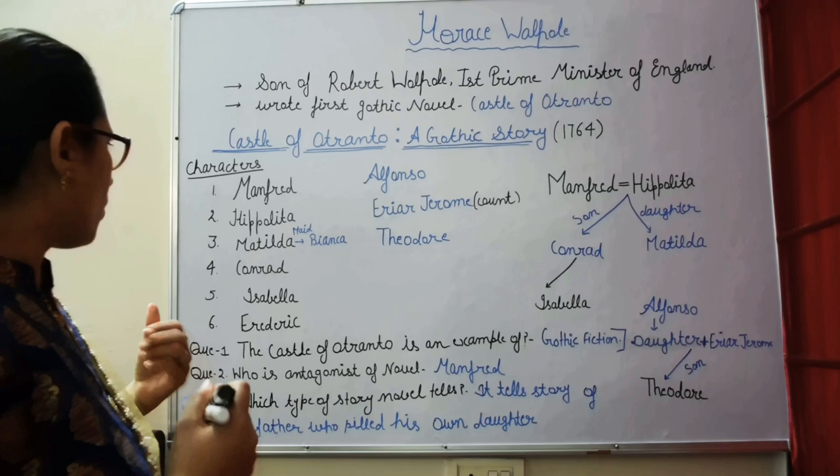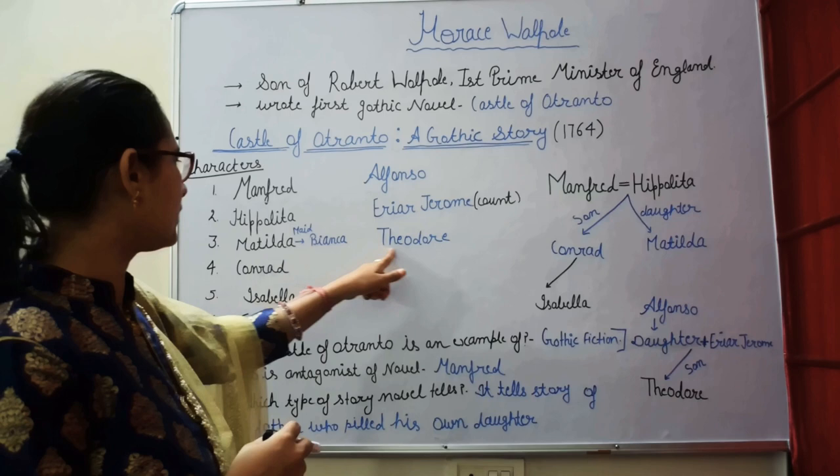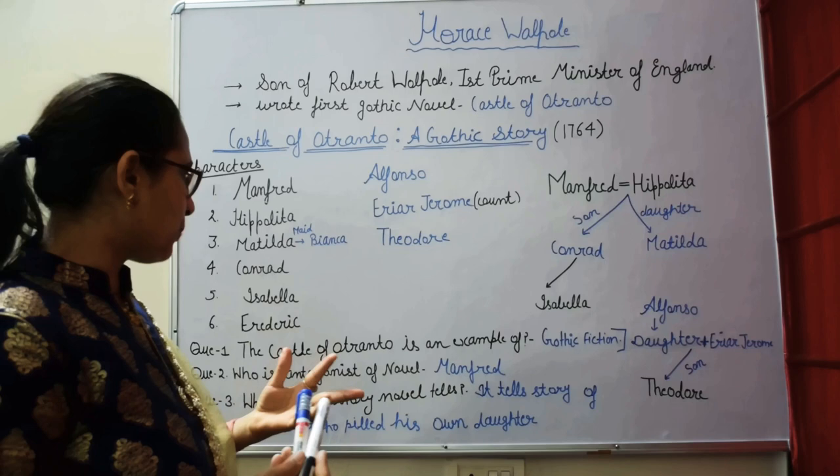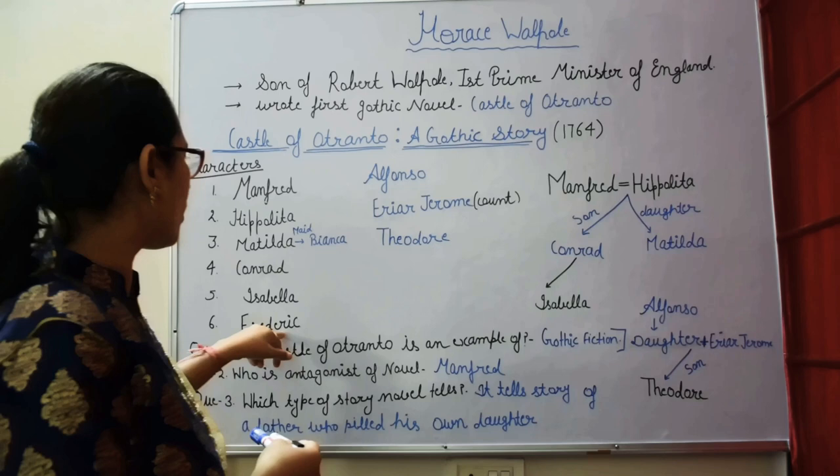There is a knight who arrives at the castle. Manfred closes the castle gates. But Matilda helps Theodore escape because she loves him. Theodore is hiding in a cave. The knight who comes is revealed to be the father of Isabella — Frederick.